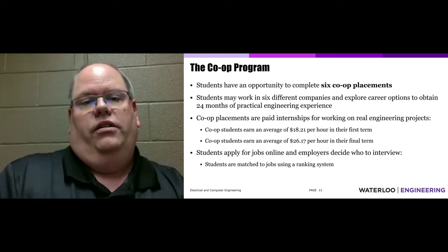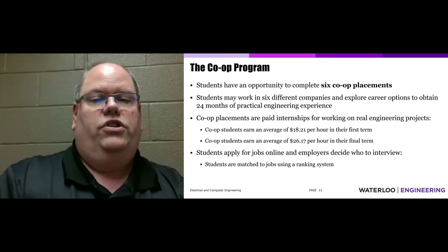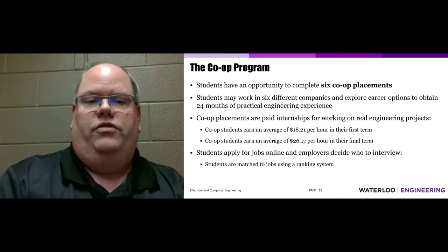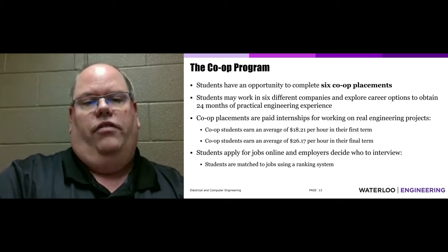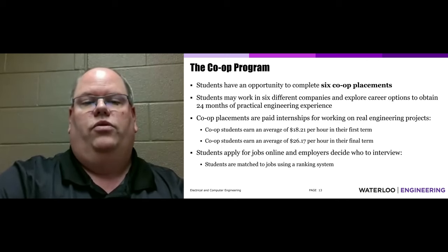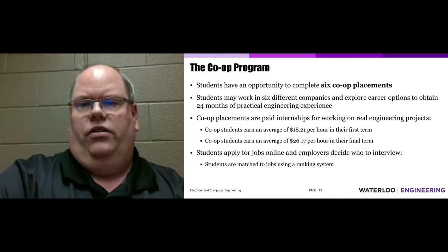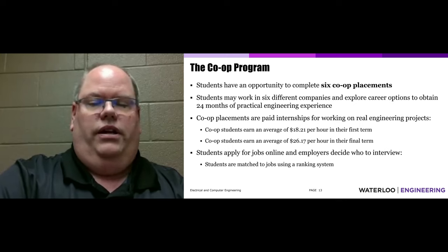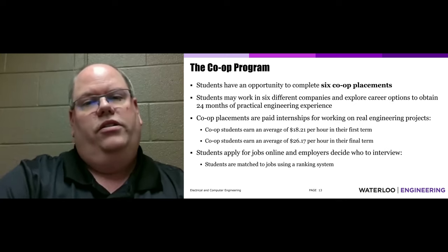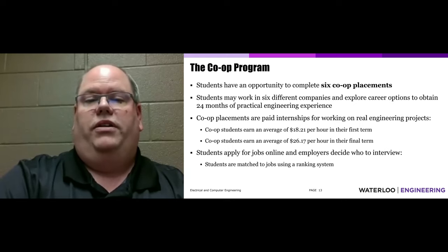In terms of compensation, first-year co-op students earn an average of $18.21 per hour in their first term, and final-term co-op students in their sixth term earn an average of $26.17 per hour. This can vary quite widely — students working in California, for example, get paid in US dollars, which converts to significantly more in Canadian dollars.